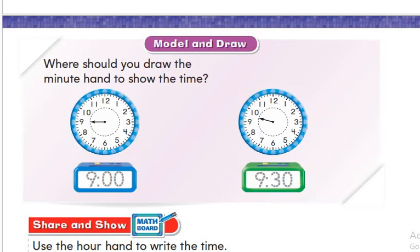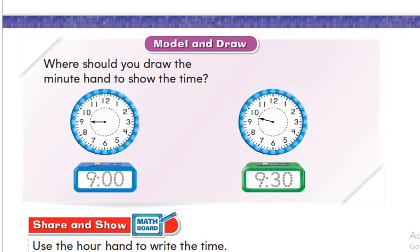First, if the hour hand points exactly to number 9, it will be 9 o'clock. The minute hand will point to number 12. So if the hour hand points to number 9 exactly, the minute hand will point to number 12, and it will be 9 o'clock.